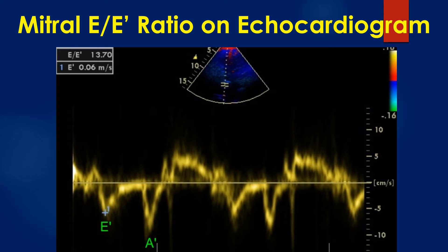It may be noted that the Nyquist limit for the color tissue Doppler is 0.16 m/s in this image, while it is 0.65 m/s in the following image for color Doppler imaging. This is because blood flow velocities are much higher than the velocity of tissue movement during systole and diastole.